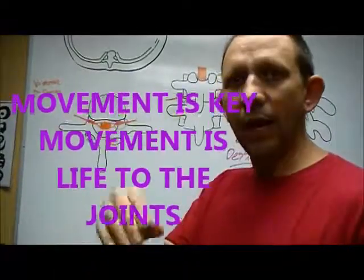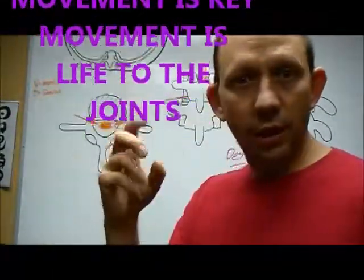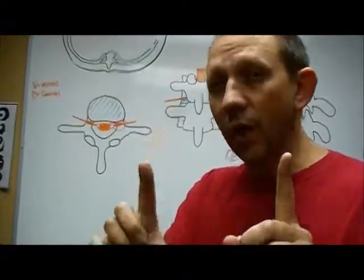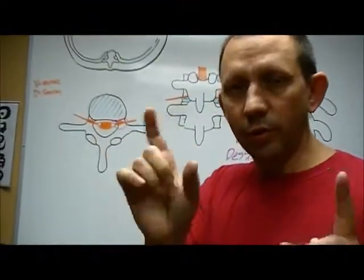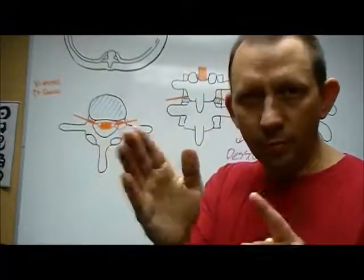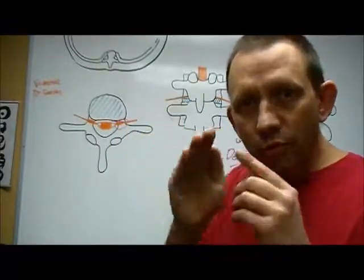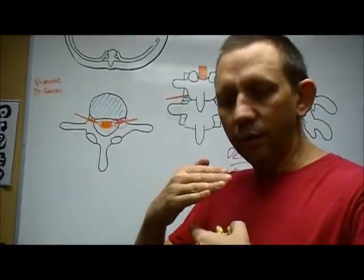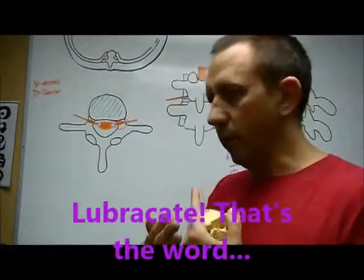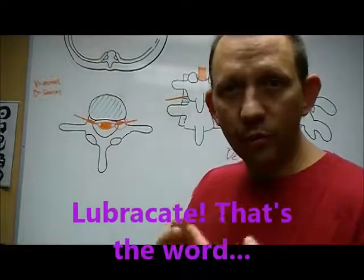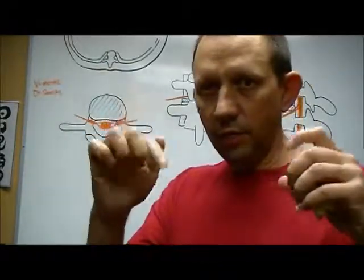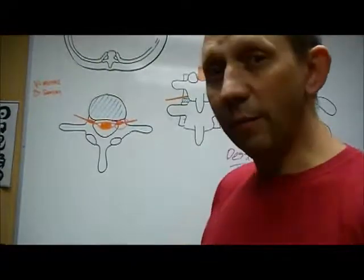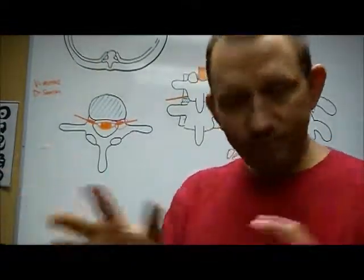Any joint — from finger joints to jaw joints — if it gets in its normal range, normal articulation or what we call juxtaposition (the relationship to the next one), and moves, it creates synovial fluid. That's a fluid that helps loosen and lubricate the joint. This applies to hyaline joints — peripheral joints like elbows. In the spine, those are fibrous joints, which is a little different, but same idea.